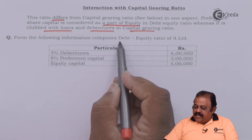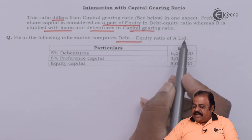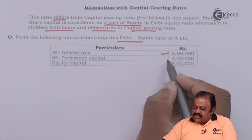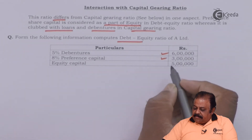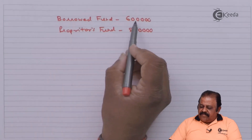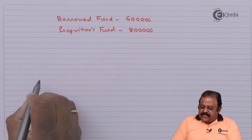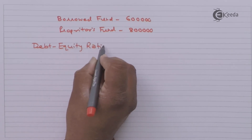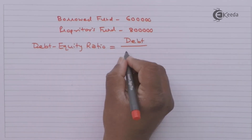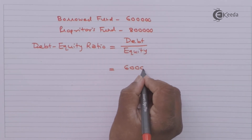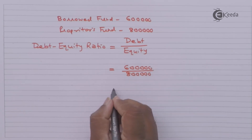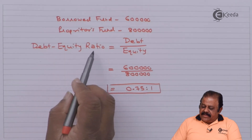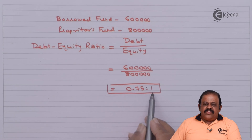From the following information we are required to calculate the debt equity ratio of A Limited. Given: 5% debentures 6 lakhs, 8% preference share capital 3 lakhs, equity capital 5 lakhs. Borrowed fund is 6 lakhs and proprietors' fund is 8 lakhs. The debt equity ratio comes to 0.75 is to 1.